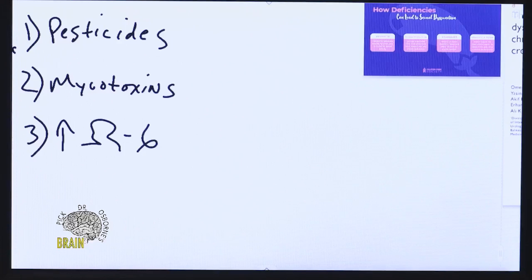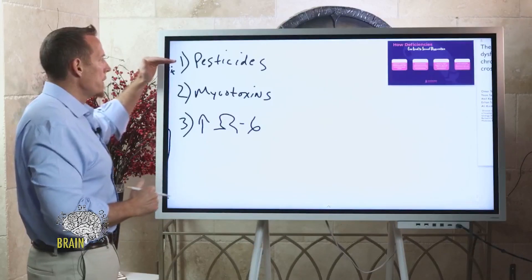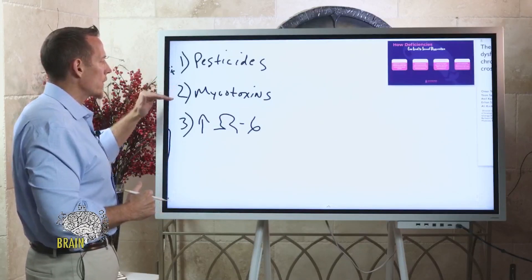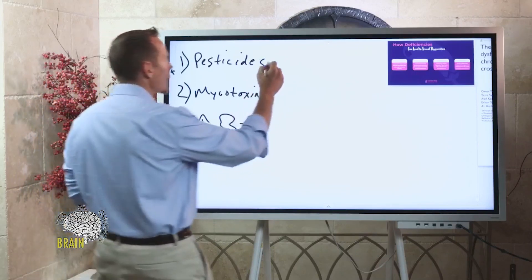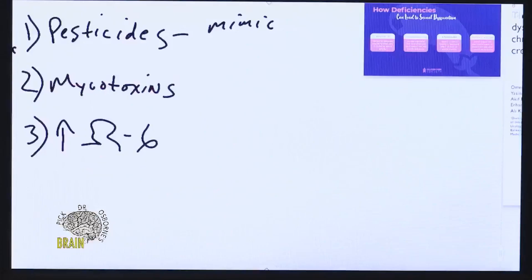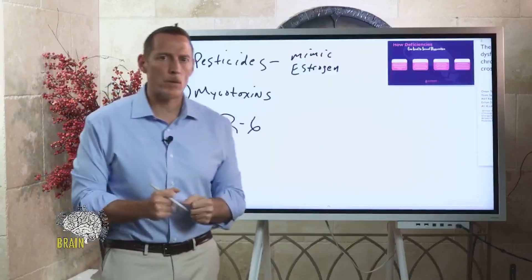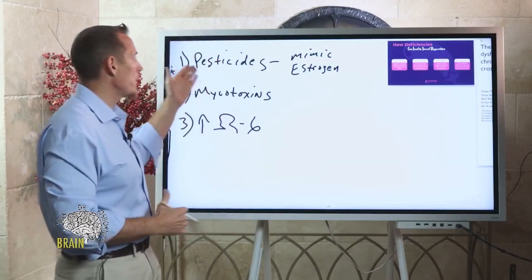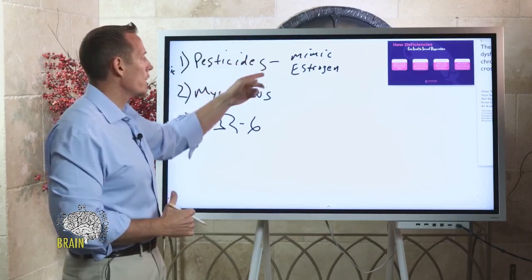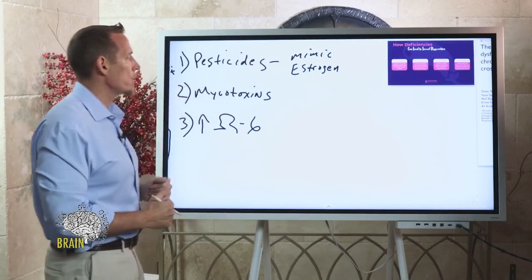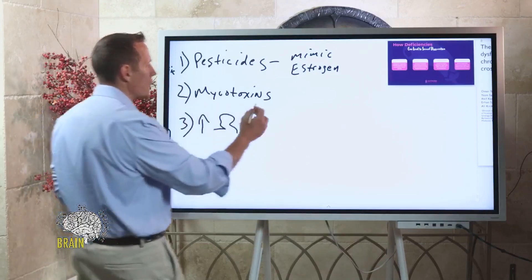Number three is excessive omega-6 fatty acids. The reason I want to talk about these three — going beyond gluten — is that they can also impact your sex life. Many pesticides mimic estrogen, so for men this will definitely impact sexual function, and for women, hyperestrogenism has been linked to sexual dysfunction as well. Anytime you're exposed to chemicals that mimic estrogen, you can really implode your sex life.